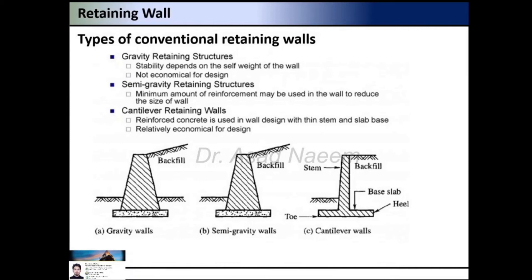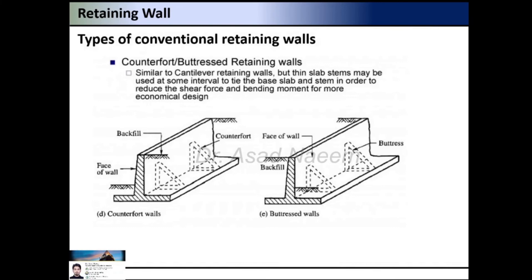The third type is the cantilever retaining wall. It is a complete reinforced concrete wall with a thin stem and a thin slab base. This is a relatively economical and easy-to-build design. The fourth type is the counterfort or buttress retaining wall, which is similar to the cantilever RC retaining wall, but thin slab stems are used at intervals to tie the base slab and the stem together in order to reduce shear force and bending moment, resulting in a more economical design. As you can see in the figure, the vertical stems are connected with the horizontal base, reducing bending moment and shear effects. This type can be used for longer wall sections.